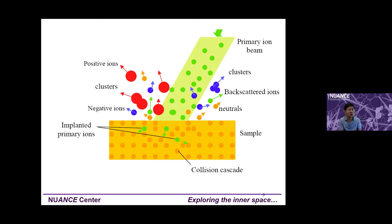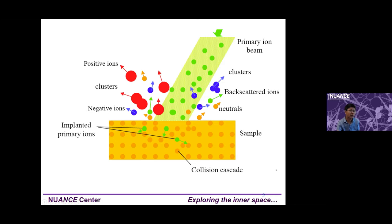If an element is easily ionized — like sodium or lithium — even a small amount will give a very strong peak at the detector. So in SIMS you detect ions, and the surface must be easy to ionize to get a strong signal. The cluster generates positive ions in positive mode and negative ions in negative mode — that is what happens on the surface.